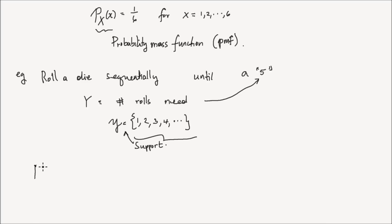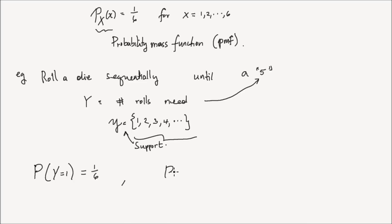Let me find the probability that y takes a value of 1. What is that? The probability of observing a 5 is 1 over 6. So P of y equals 1 is 1 over 6.